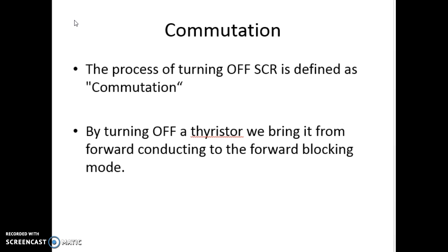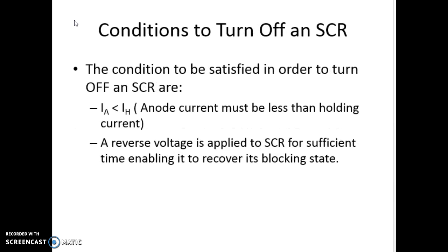What are the conditions to meet to achieve the turn off of the SCR? The anode current — the current that passes from the anode terminal to the cathode — has to be less than the holding current. The holding current is the minimum current required for the SCR to remain in the on state, i.e., the forward conduction state. If the anode current is less than the holding current, the SCR will turn off.